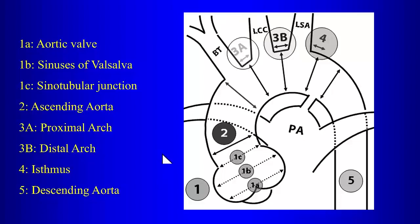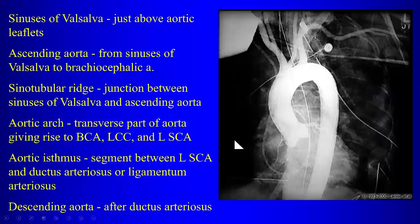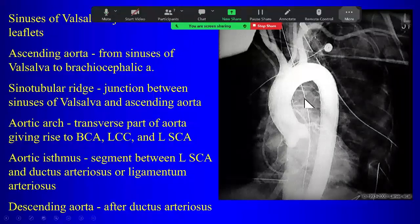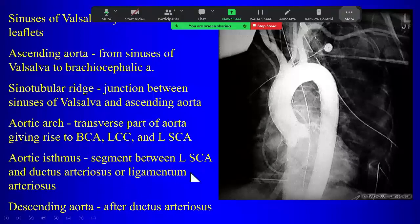On angiography, you can see the outpouchings of the sinuses of Valsalva, then the ascending aorta from there to the brachiocephalic artery. The sinotubular junction is the area that just starts to narrow right above the sinuses of Valsalva. Then we have the aortic arch where the great vessels come off, the isthmus between the left subclavian artery and the insertion of the ligamentum arteriosum, and then the descending thoracic aorta after that.